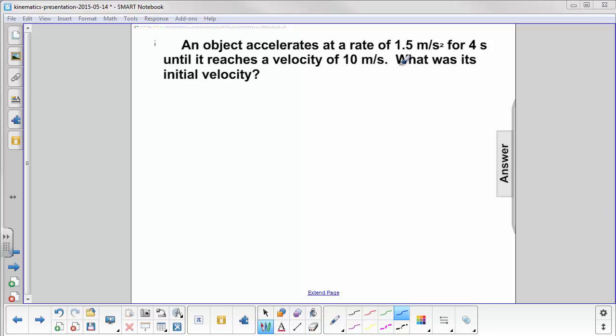An object accelerates at a rate of 1.5 meters per second squared - that's our a - for 4 seconds, that's our t variable, time, and it has a final velocity of 10 meters per second. What was its initial velocity?